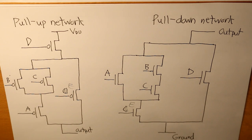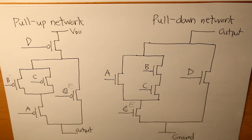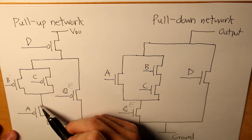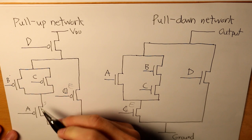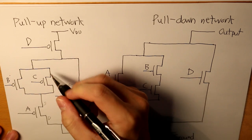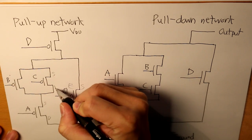The important thing to know is to understand the pull-up network and the pull-down network. The pull-up network is simply the PMOS substrate, and for the pull-down network, that's where the NMOS substrates are. For the PMOS, each transistor, the top side is basically the source. We'll label all of them accordingly.